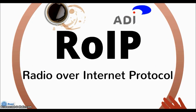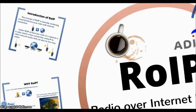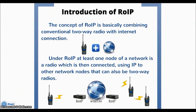R.O.I.P. — Radio over Internet Protocol. If you know nothing about R.O.I.P., let's start from the introduction. The concept of R.O.I.P. is basically combining conventional two-way radio with internet connection. Under R.O.I.P., at least one node of a network is radio which is LAN connected, using IP to other network nodes that can also be two-way radios.